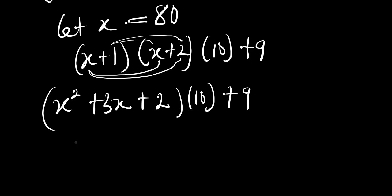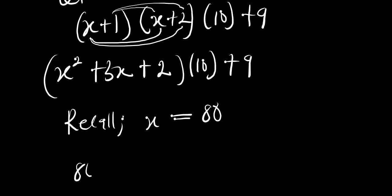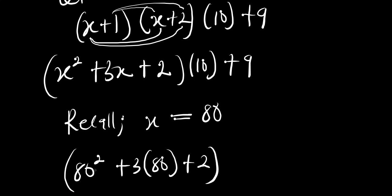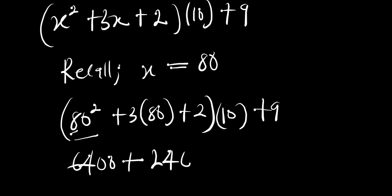Now we substitute back x equals 80. We have 80 squared plus 3 times 80 plus 2, all multiplying 10, then plus 9. What is 80 squared? 8 squared is 64, so 80 squared is 6400. Then 3 times 80 is 240, plus 2. All of this multiplies 10, then plus 9.